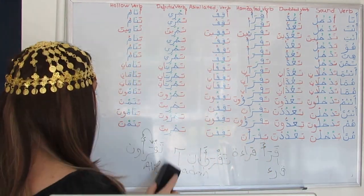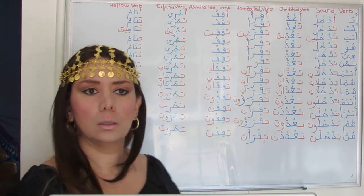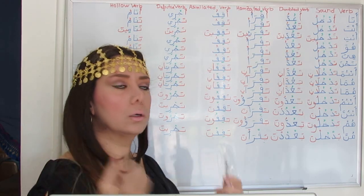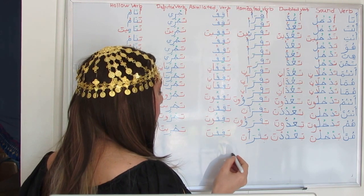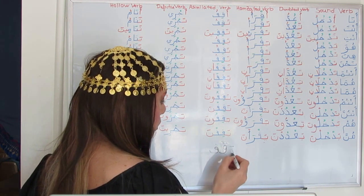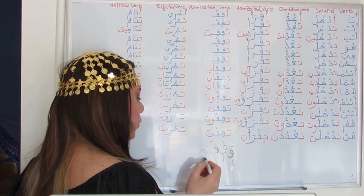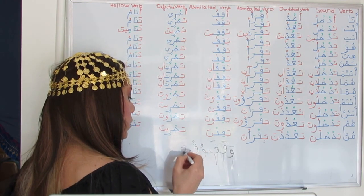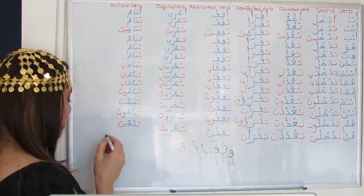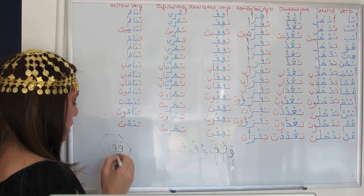The assimilated verb contains a weak letter — like the long vowel Waw or Ya — at the start of the root. Here: 'waqafa,' which has a long vowel Waw starting the stem. The verbal noun is 'wuqoof,' and waqafa means 'to stop' or 'to stand.' There is even a traffic sign: 'Qif!' — from waqafa — meaning 'Stop!' in the imperative tense.